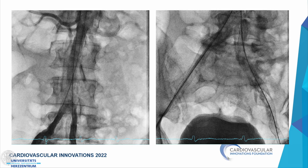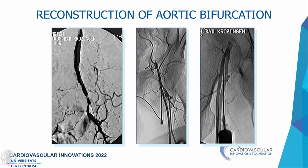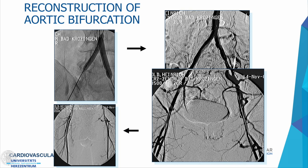The angiogram of the reconstructed iliac bifurcation shows excellent outflow into the external iliac arteries with both internal iliac artery origins widely patent, preserving the bifurcations for potential future collateralization. Kissing stents are implanted into the bifurcation, intentionally not extending into the aorta, to preserve the option for an up-and-over access in the future.